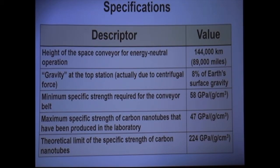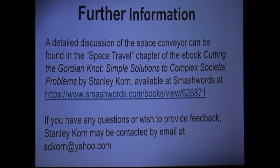A detailed description of the space conveyor can be found in the space travel chapter of my ebook, Cutting the Gordian Knot: Simple Solutions to Complex Societal Problems, available at Smashwords.com/books/view/628871, or you can go on the Smashwords.com website and enter my name in the search bar to pull up all of the books that I authored. If you have any questions or would like to provide feedback, I can be contacted at sdkorn@yahoo.com.